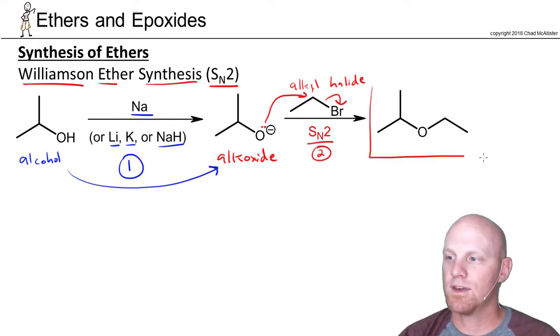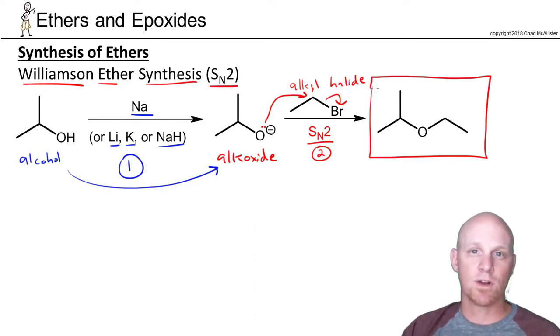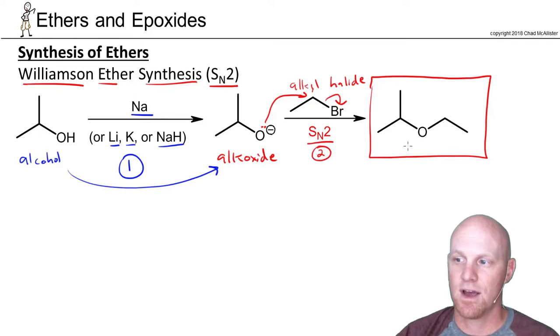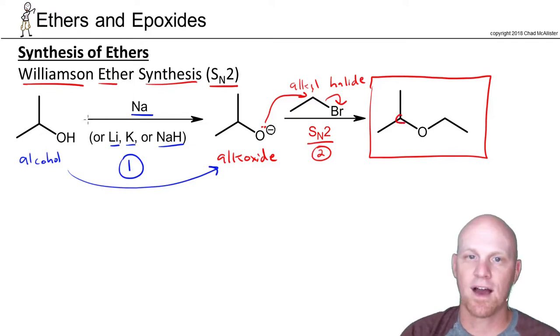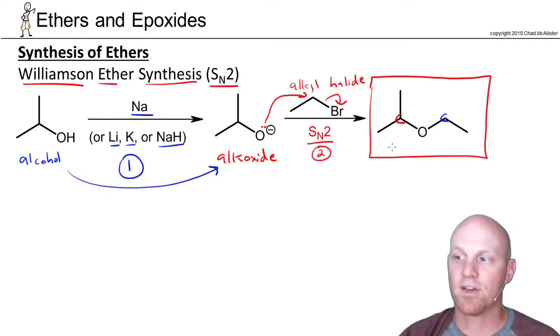Sometimes we'll give you the ether product and then say what's the best way to make it. And the best way to make it you want to focus on the synthesis. And the question is would you rather do backside attack on this carbon or would you rather do backside attack on this carbon because you have a chance of making either one of these carbon-oxygen bonds in the Williamson ether synthesis.